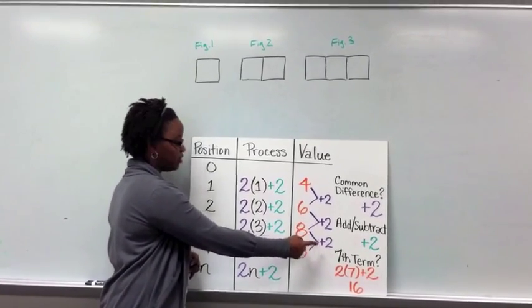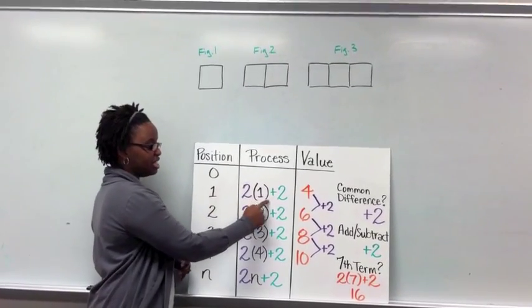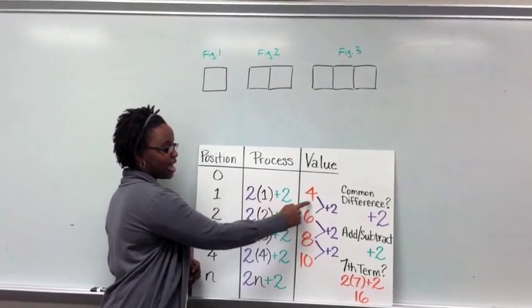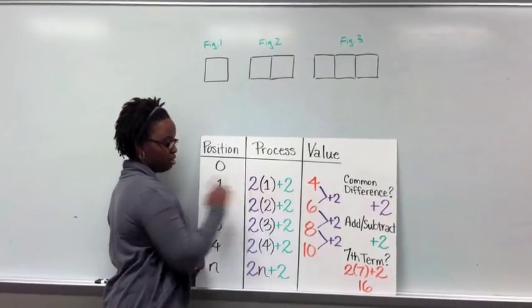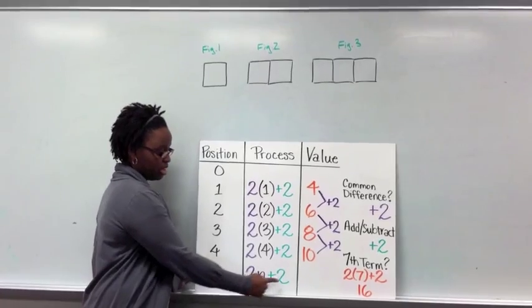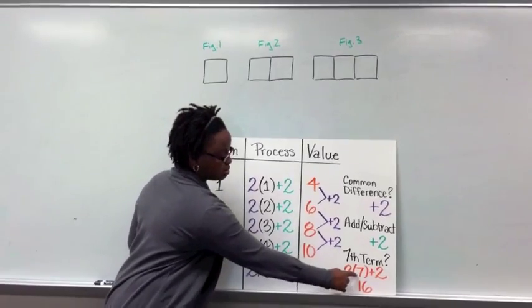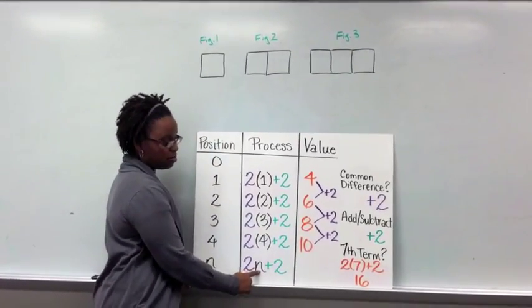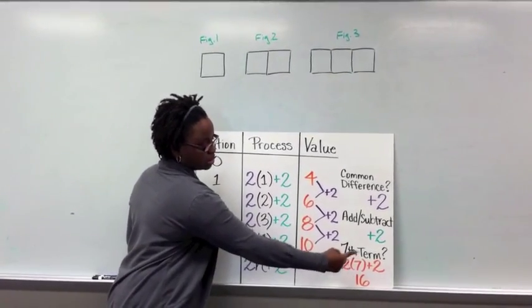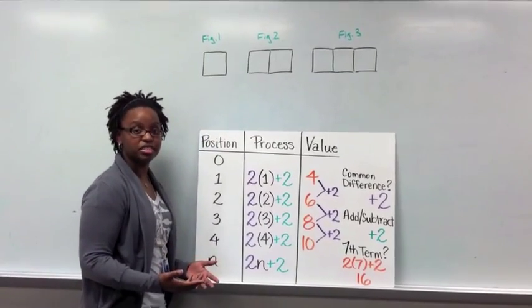Remember, you take that common difference and multiply it by your position. Once you've done that, you need to look and see, what do I need to add or subtract to get to that value? So here, our rule should have been 2 times the position, and then we had to add 2. If you wanted to even find the 7th term, we would just plug in a 7 there for our variable. And so 2 times 7 is 14, plus 2 means that the 7th one would have a perimeter of 16.